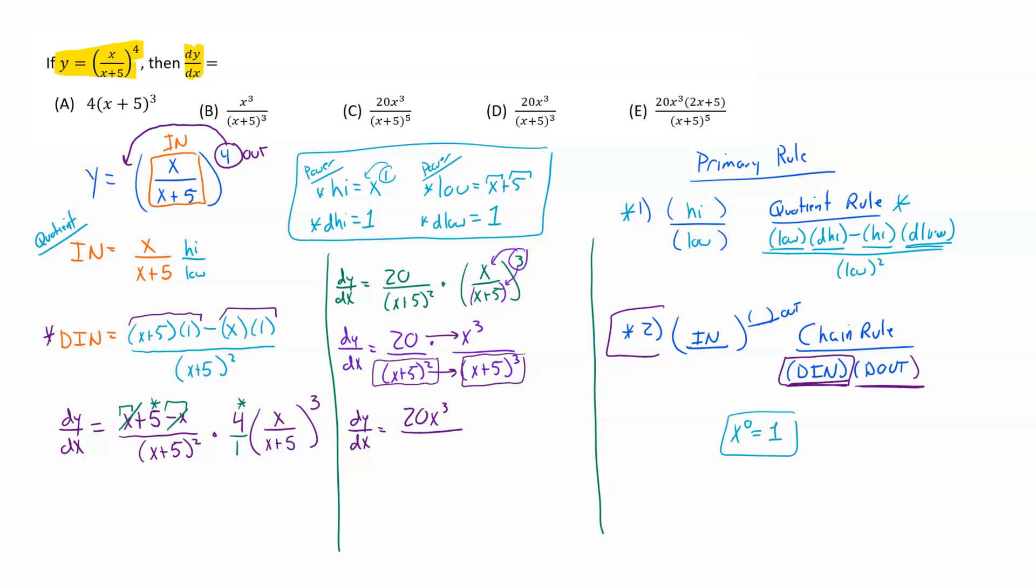When you multiply those, you add your exponents. So in the end I end up with x plus 5 to the fifth. And now I've simplified it down and that is really where my final answer is going to be.